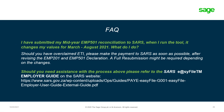Customers claiming ETI are encouraged to run the ETI validation utility every month as part of their monthly processing checklists. Closing off with a frequently asked question: I have submitted my mid-year EMP 501 reconciliation to SARS. When I run the tool, it changed my values from March to August 2021 — what do I do? Should you have over claimed your ETI, please make the payment to SARS as soon as possible after you have revised your EMP 201 and EMP 501 declaration. A full resubmission might be required depending on the changes. Should you need assistance, please refer to the SARS Easy File Employer Guide available on the SARS website — link provided below.